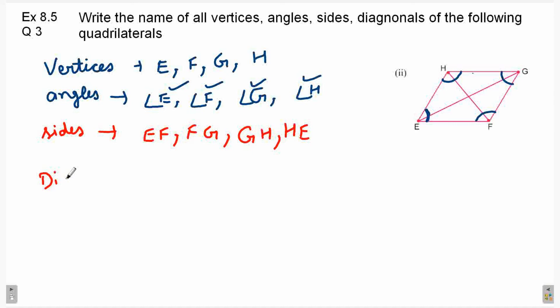Next is diagonals. To quadrilateral ke diagonals opposite vertices ko aapas me milate hai. Jaise E ko mila diya aapne G ke saath. So, EG is one diagonal. Dusra diagonal kaun sa banega? H ko mila do F ke saath. HF. Abhi line segments hai dono, to inko aap EG ko GE bhi likh sakte, HF ko FH bhi likh sakte. And diagonals aapke quadrilateral ke hamesha 2 hote hai. So, this completes your question number 3. Thanks for watching this video. I'll see you next.